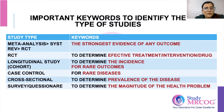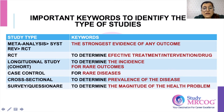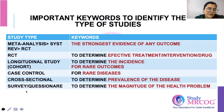To determine the prevalence of a disease, we use a cross-sectional study. To determine the magnitude of a health problem, the study used is a survey or questionnaire.